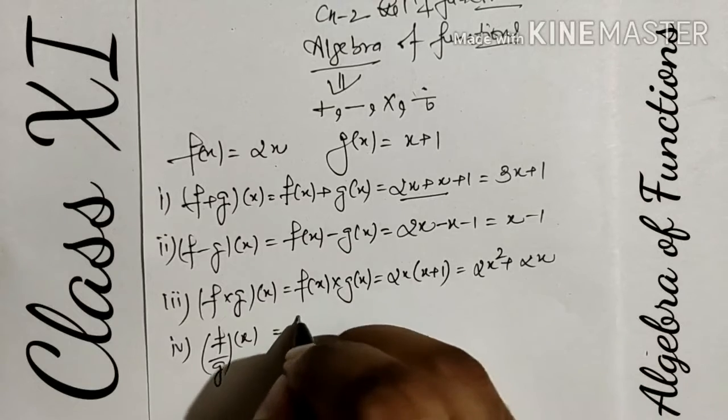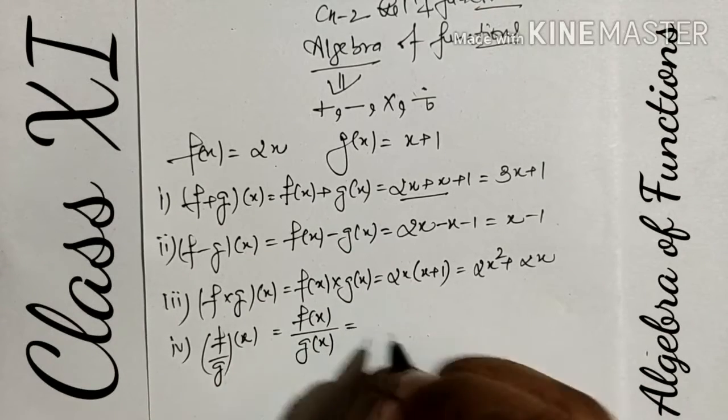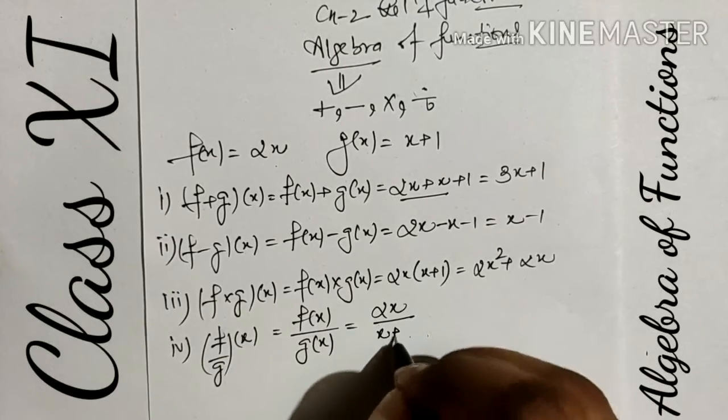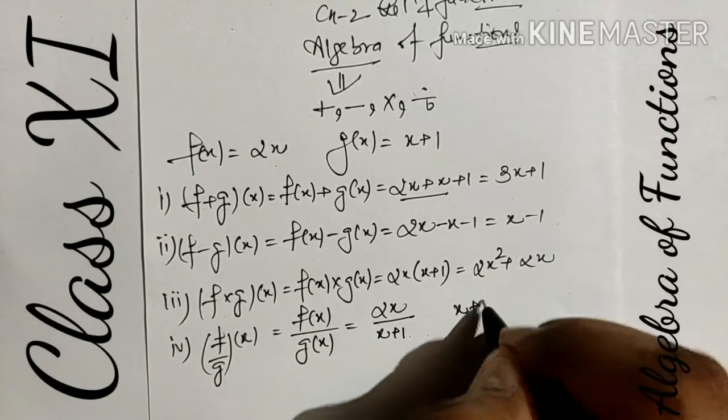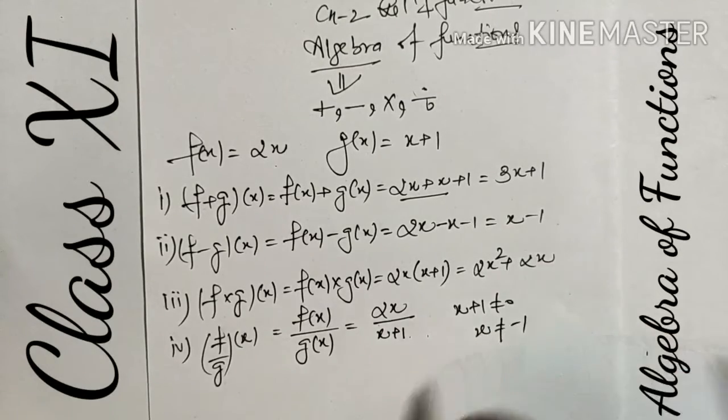And in division, it can be written like this: f(x) divided by g(x), which is 2x divided by (x+1). But we know that denominator cannot be zero, so the value of x is restricted for x ≠ -1.